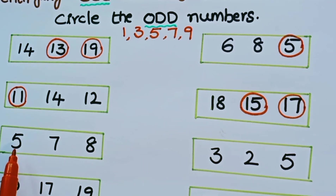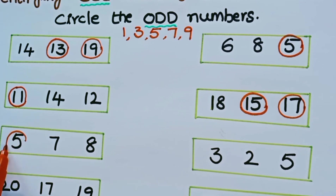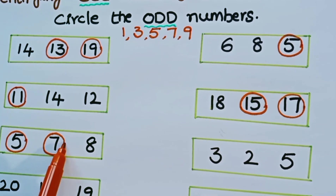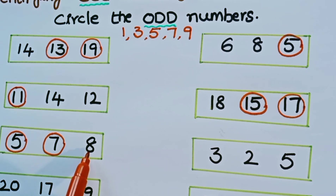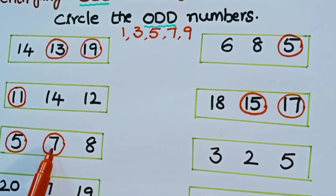Now the next row has 5, 7, and 8. What are the odd numbers? 5 is an odd number. Is 7 odd or even? 7 is an odd number. Is 8 even or odd? It is an even number, so we should not circle 8. We have 2 odd numbers in this row: 5 and 7.